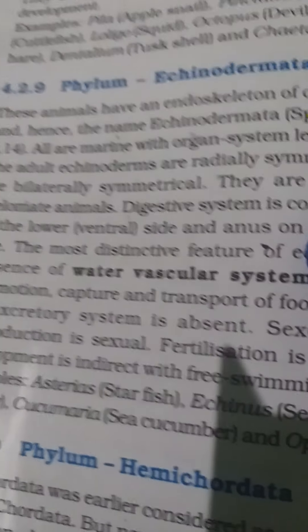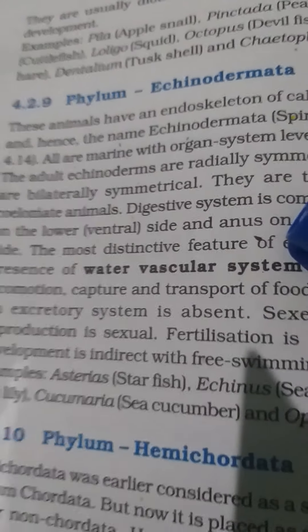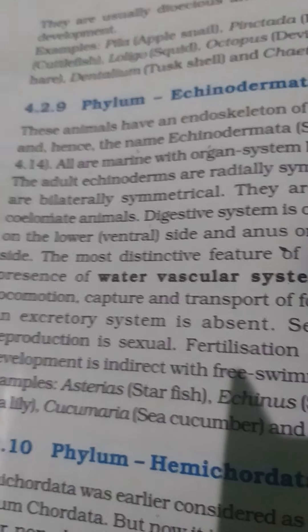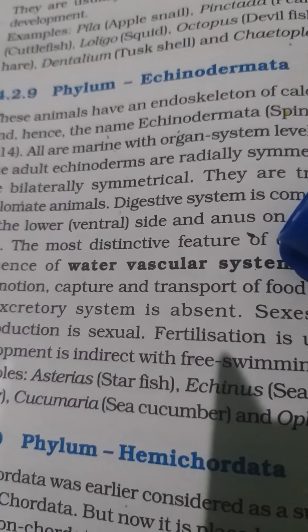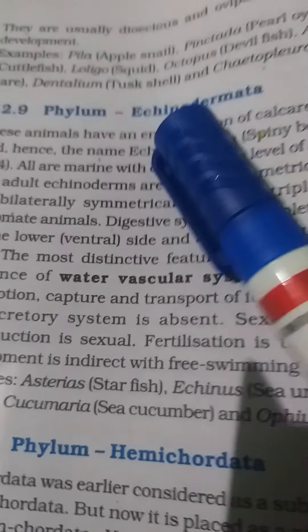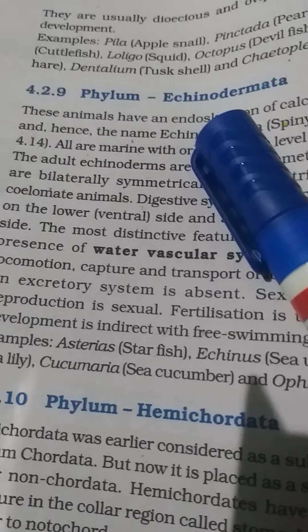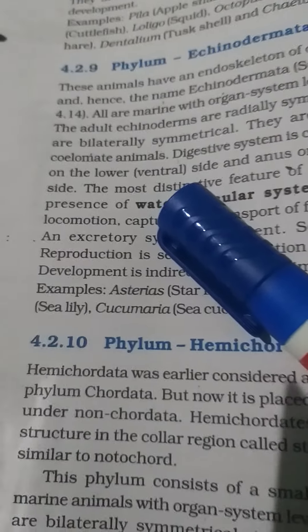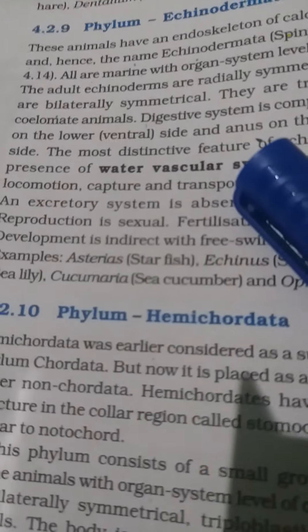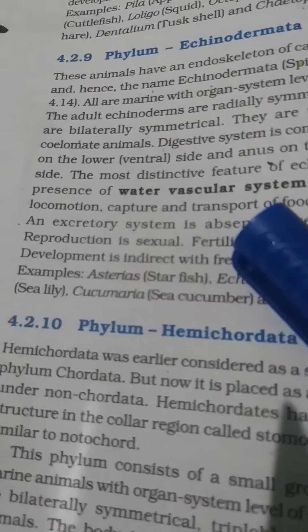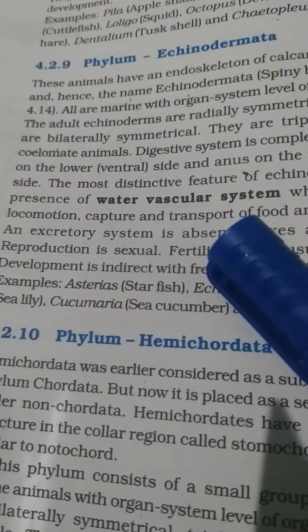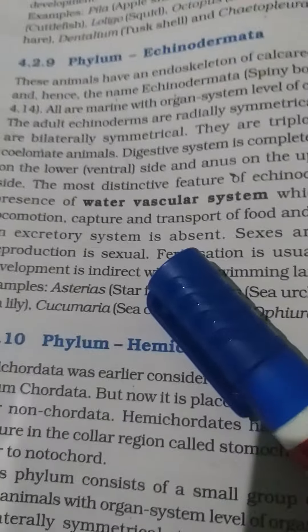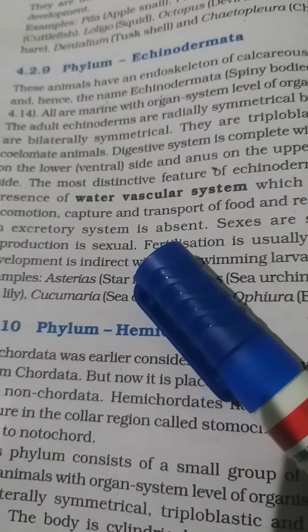Phylum Echinodermata consists of entirely marine organisms. The body is radially and bilaterally symmetrical, and they have an endoskeleton — calcareous ossicles found within the body structure. The digestive system is complete with the mouth on the lower ventral side and the anus on the dorsal side.